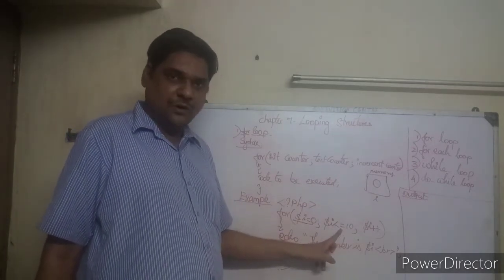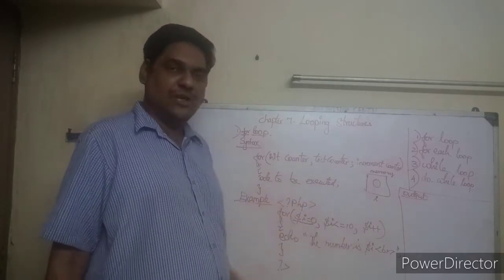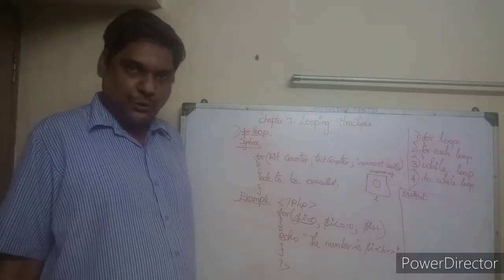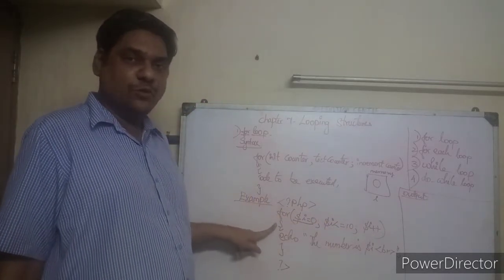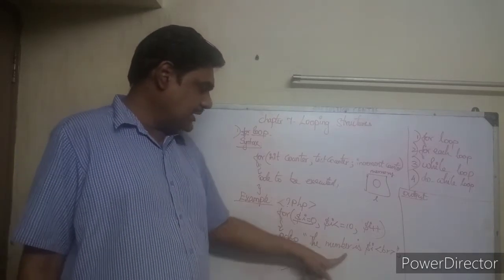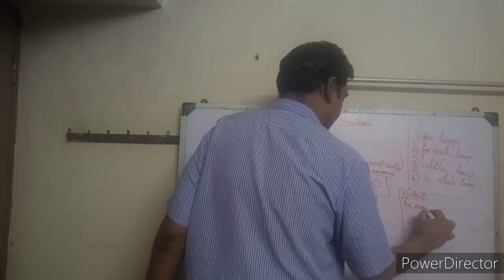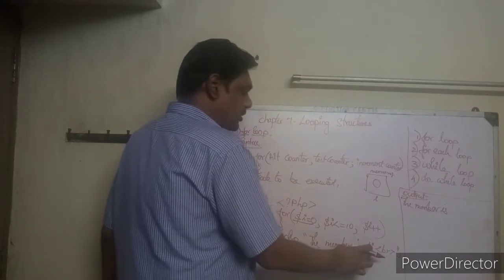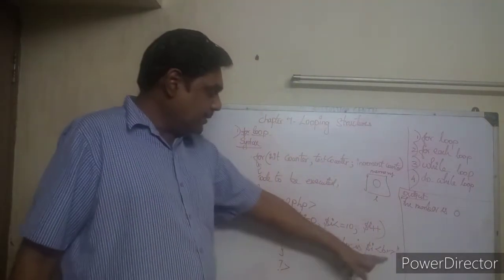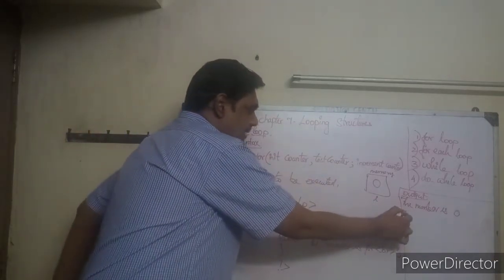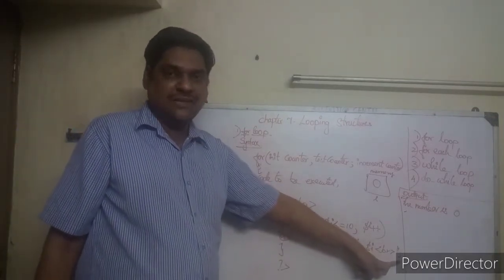Then the test counter: `$i <= 10`. The current value of `i` is zero. Is zero less than or equal to 10? True. Since it is true, the computer will not go to the third part — it will come inside the loop. Inside the open curly braces, the statement is: `echo 'The number is $i'`. So it will print 'The number is 0'. After that, `br` means a line break, moving the cursor to the next line.